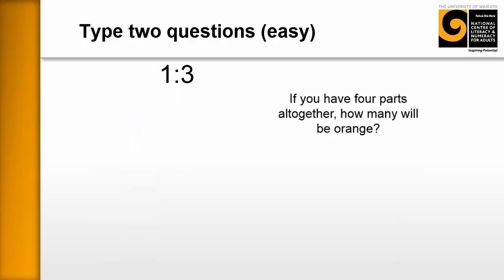So here's an example. We'll use a one to three ratio. If you have four parts all together, how many will be orange? And this often is just a different way of thinking for the learners about it. It just frames the question slightly differently. There they go. And so hopefully they'll make that out of the resources that they've got and see it.